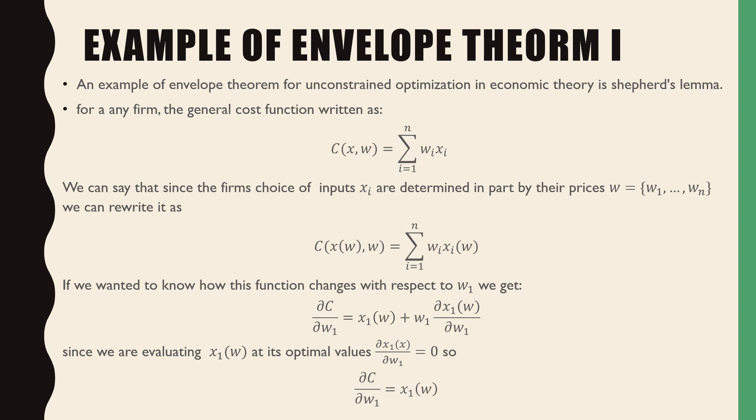We can rewrite it as the summation of w_i x_i(w), where i goes from 1 to n, where our inputs x_i are parameterized by this input price vector. If we want to know how this function would change with respect to w_1, we would get the following.